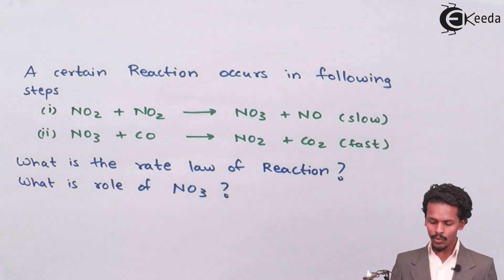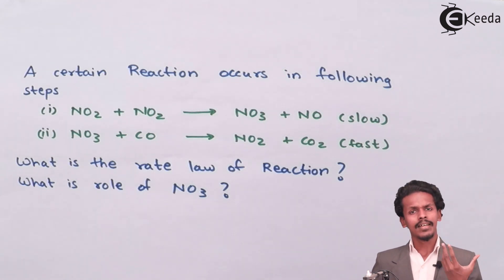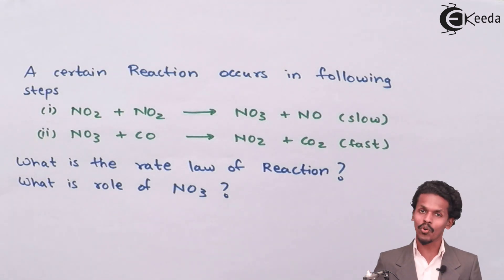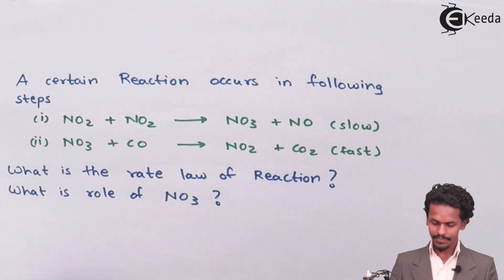The first thing we can do is estimate the overall reaction. Even though it has not been asked, we can estimate the overall reaction. To mention the overall reaction, we should write the given chemical equation stepwise sequentially. We are writing it now.